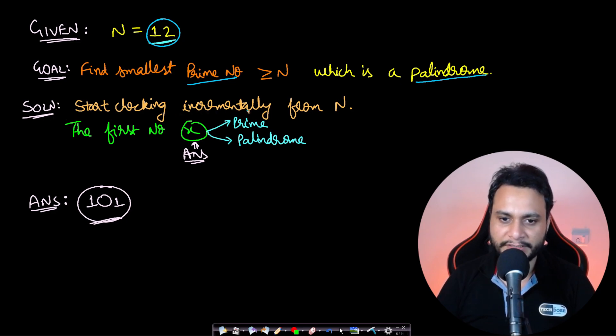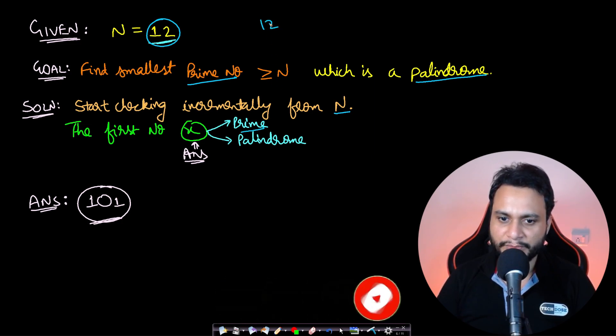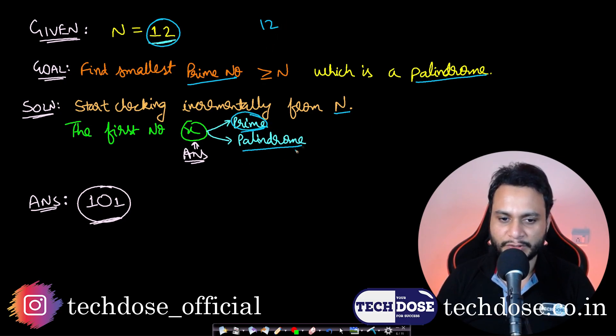Now we need to find the smallest prime number which is greater than or equal to 12 in this case, and it should also be a palindrome. The solution is to start checking incrementally in steps of size 1 from n. That is, we'll first check for 12 if it's a prime number.